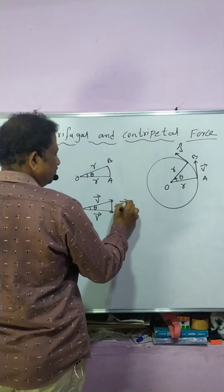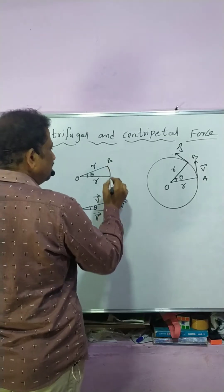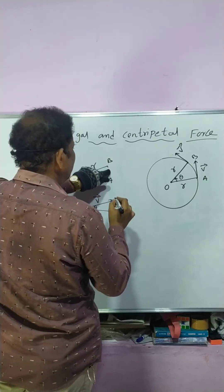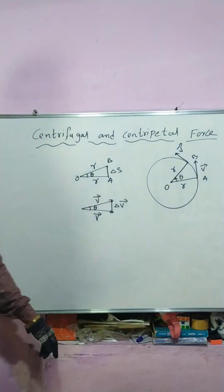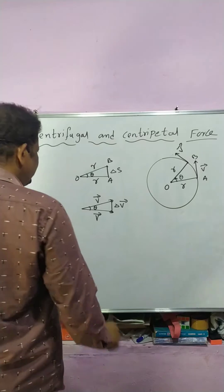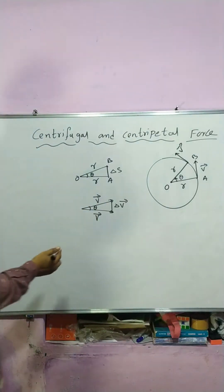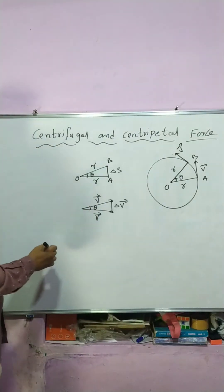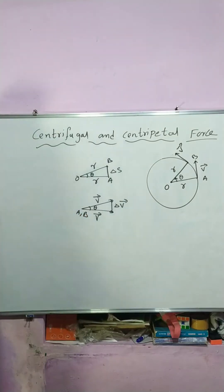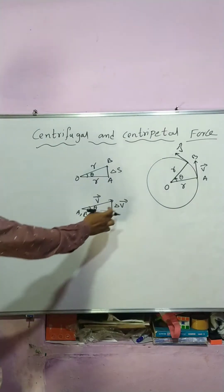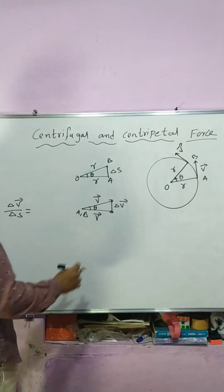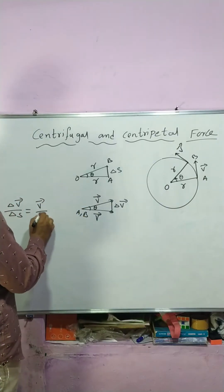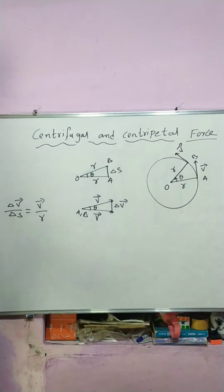This side is the change in velocity, delta V, and this side is the displacement, delta S. Since the two triangles are similar, comparing corresponding sides: delta V / delta S = V / R.